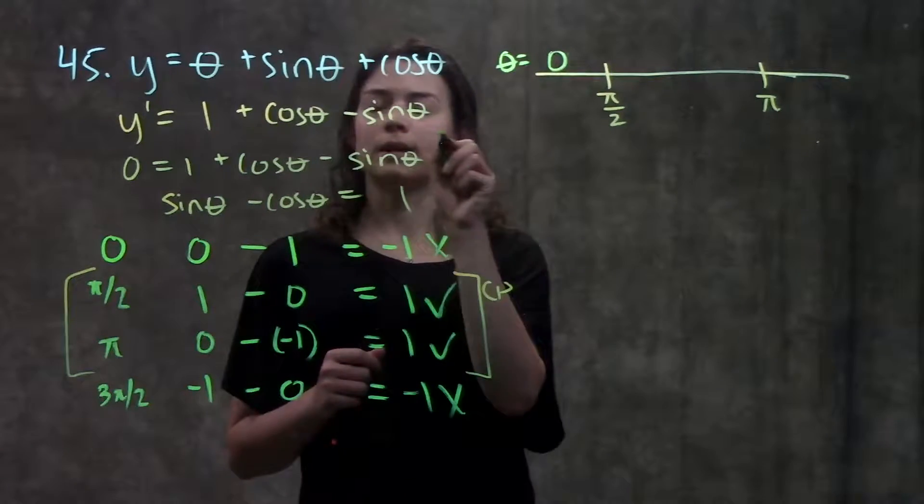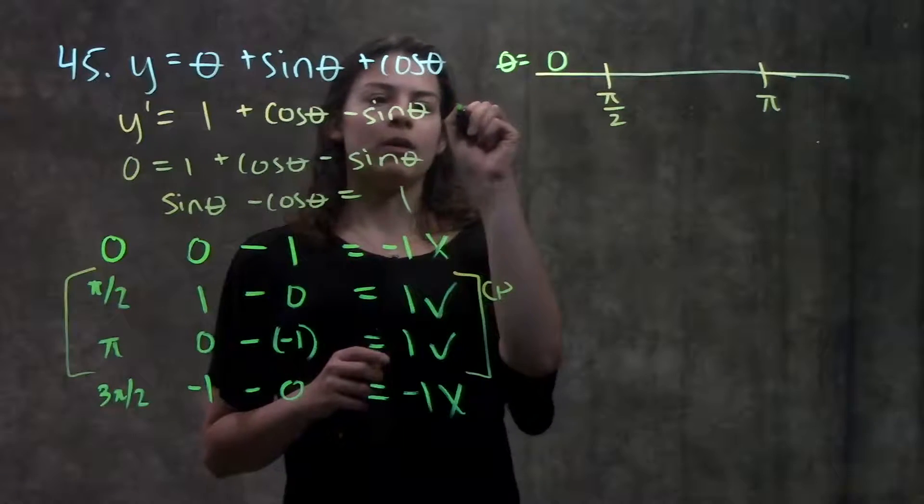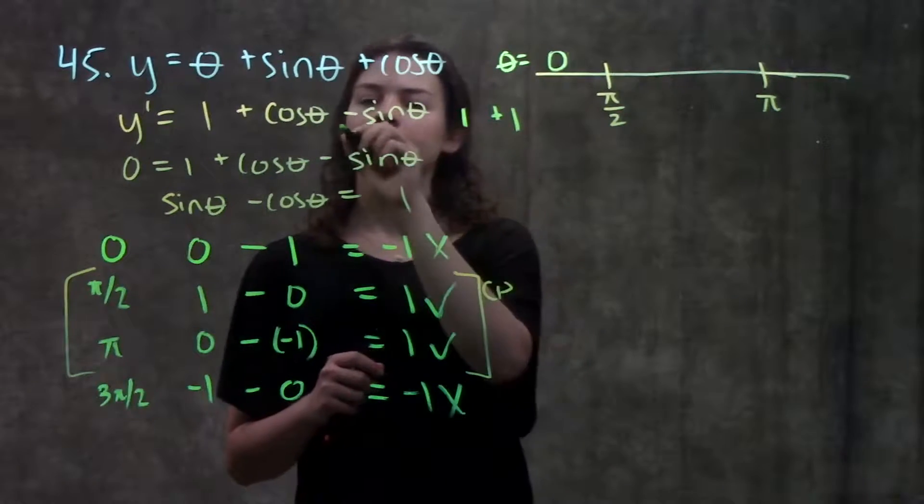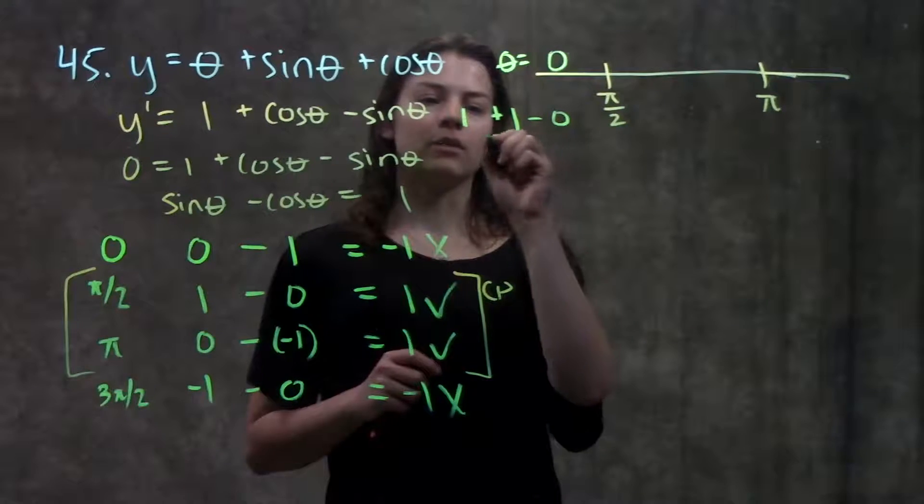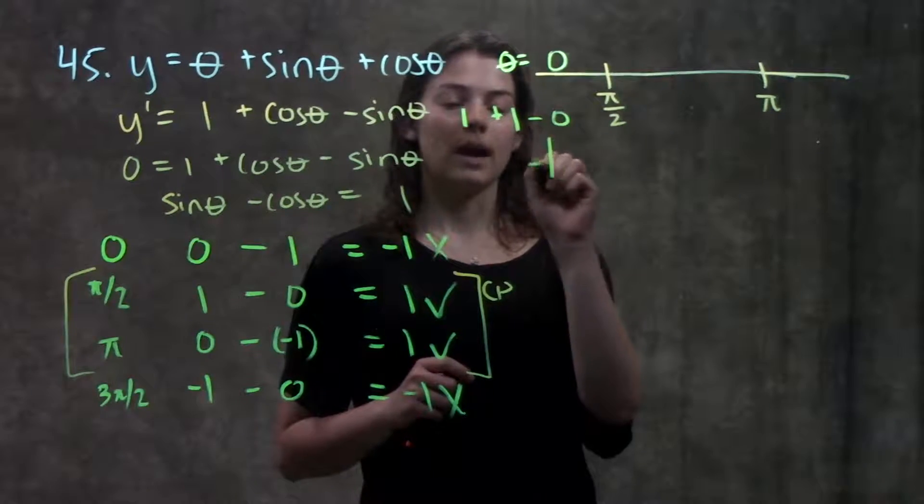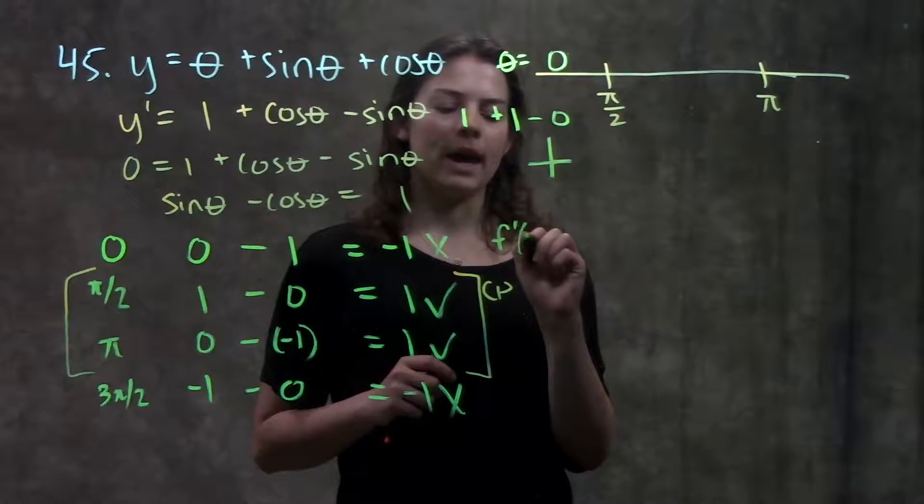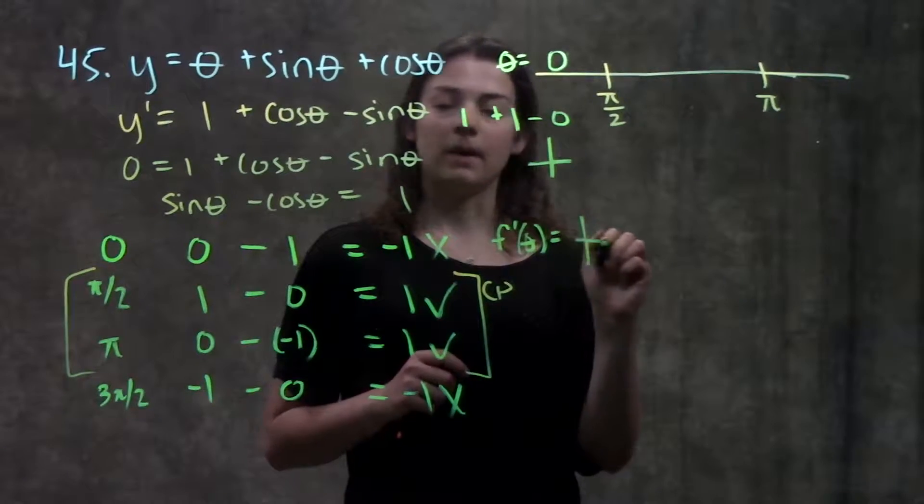When I plug zero in for my derivative, I get one plus cosine of zero is one, minus sine of zero is zero, one plus one, this gives me a positive value. So my f prime of theta is positive.